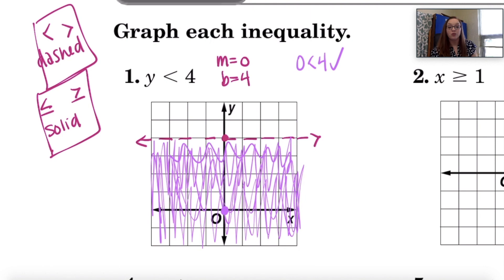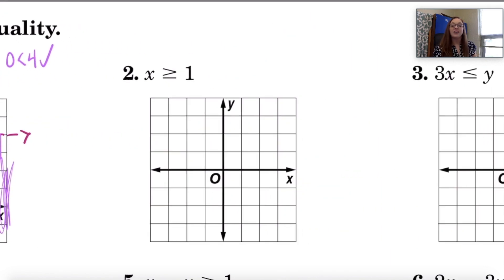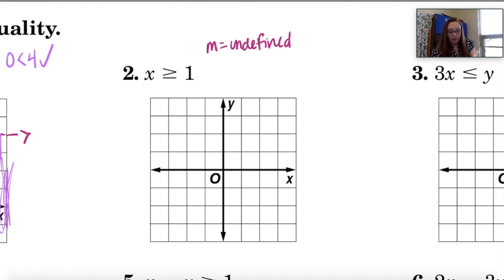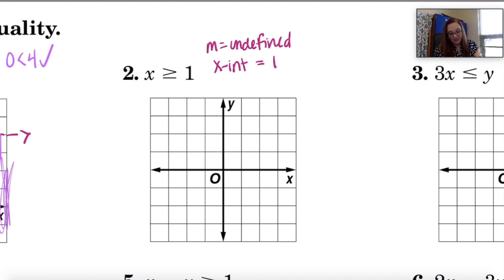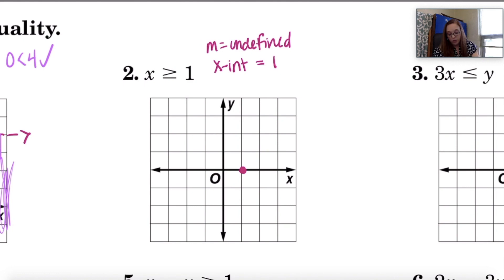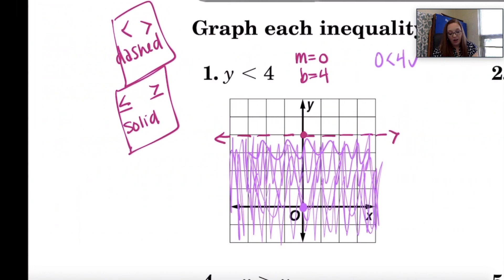Let's try number two. This is another special case: X is greater than or equal to 1. Now if it was an equation, just X equals 1, we would say we had an undefined slope and an X intercept of 1. So I'm going to find 1 on the X axis because this special case with an undefined slope is that vertical line — it goes up and down. Now before I draw in that vertical line, should I have a solid line or a dashed line? Remember: if you've got the 'or equal to' part, you're going to have a solid line.